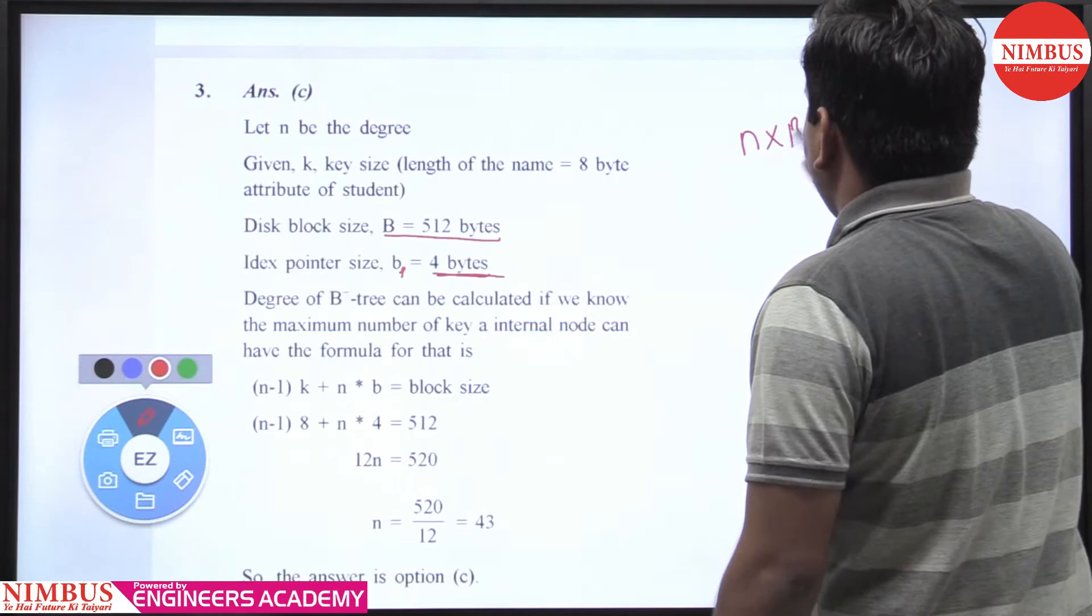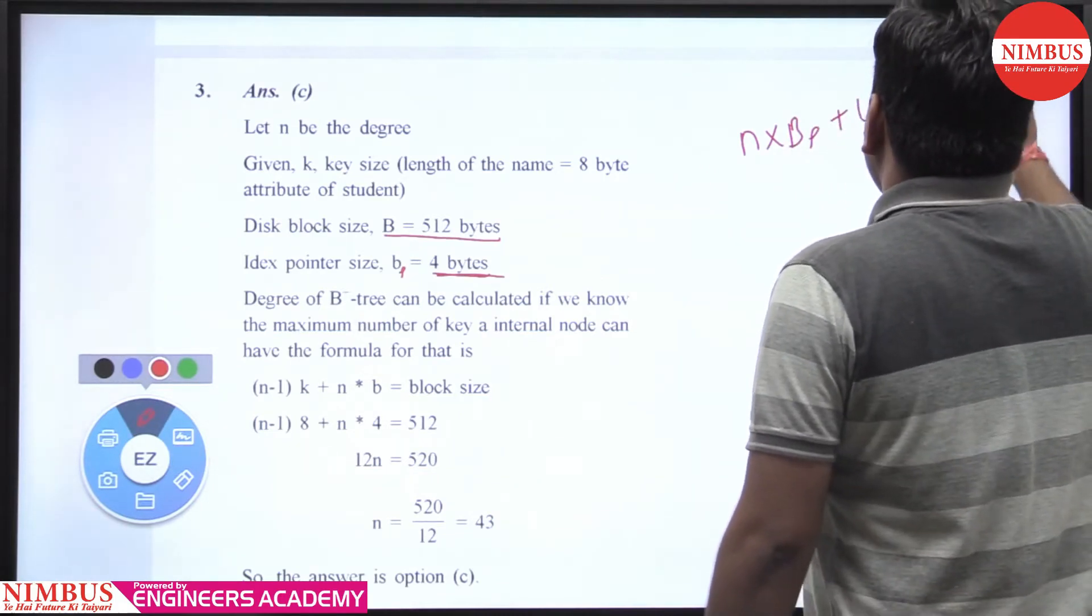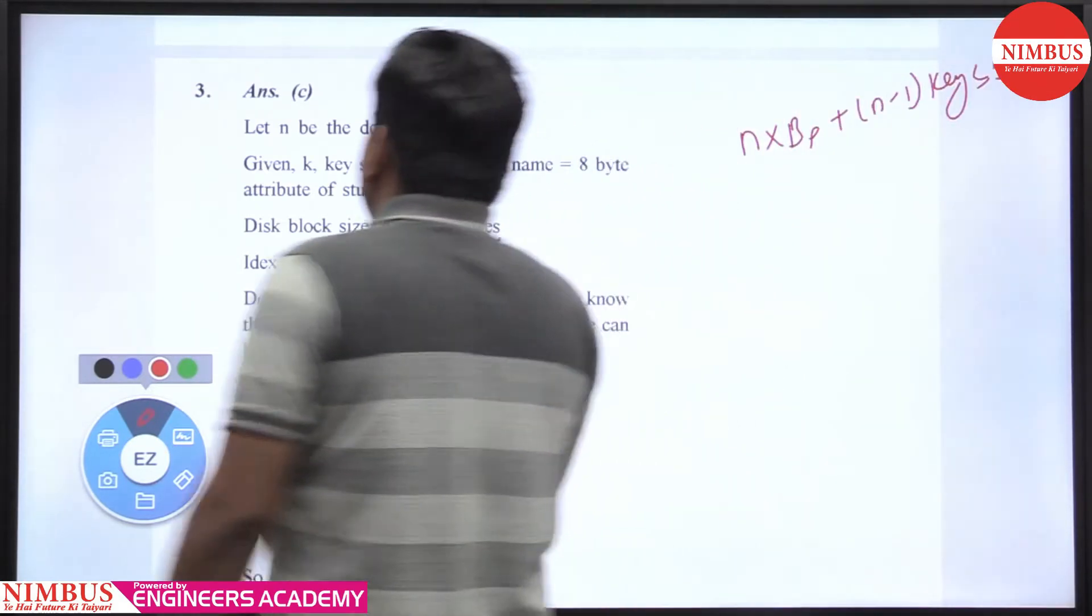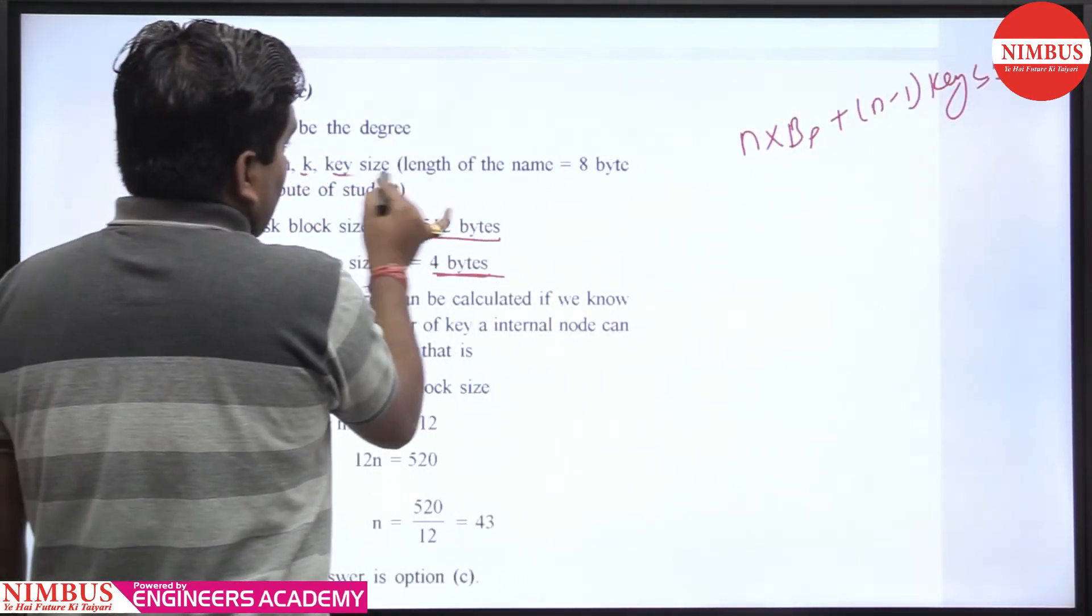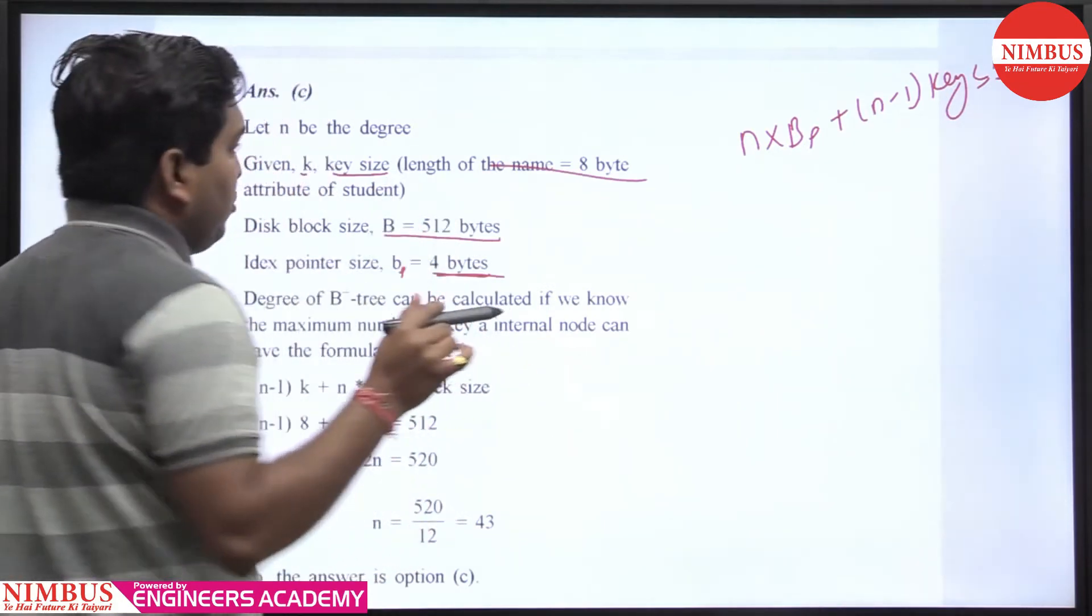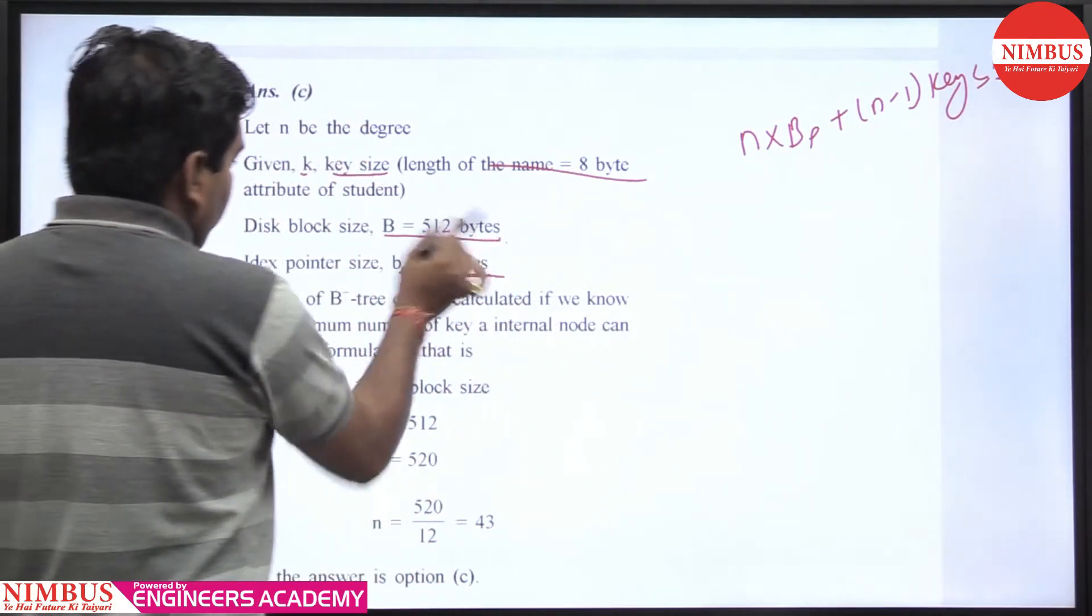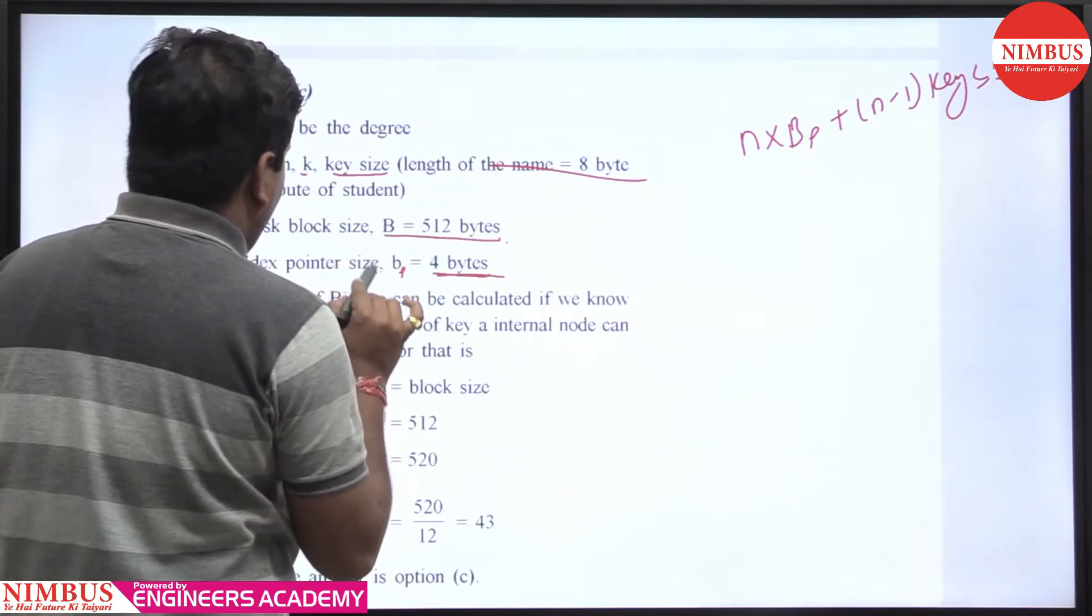N is the degree, k is the key size which is 8 bytes (the length of the name attribute), block size is 512 bytes, and index pointer is 4 bytes. The degree of B+ tree can be calculated using the formula for internal nodes.